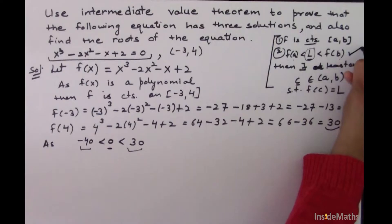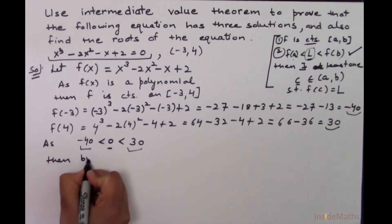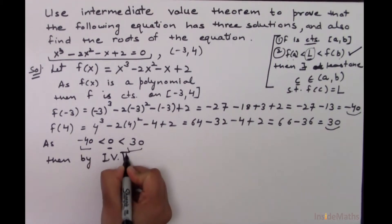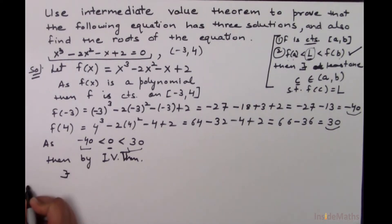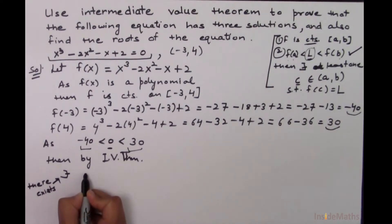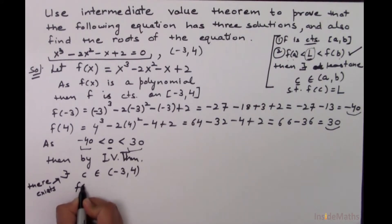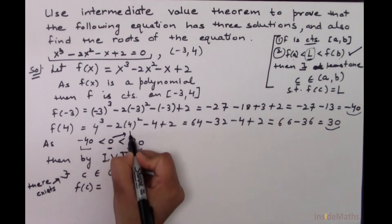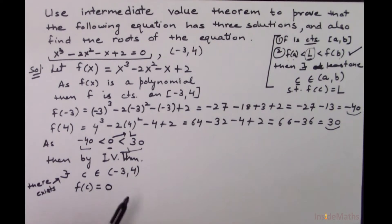That means the second condition is also satisfied, as we can find a value between these two points. Then by the Intermediate Value Theorem, there must exist a point c belonging to the open interval minus 3 to 4 such that f of c equals L. In this case, L is 0. So this is true by the Intermediate Value Theorem.